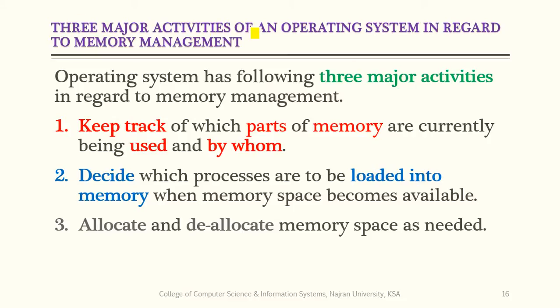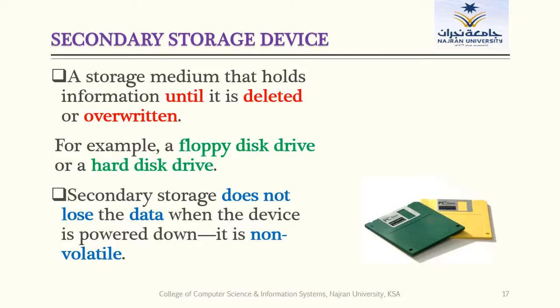We discussed three major activities of the operating system regarding memory management: first, keep track of which parts of memory are currently being used and by whom — how many blocks are in use and who is using them. Second, decide which processes are to be loaded into memory when memory space becomes available. Third, the last responsibility of the operating system is to allocate and de-allocate memory space as needed.